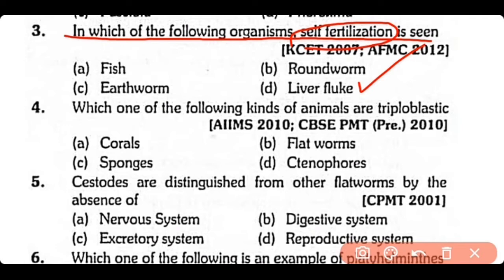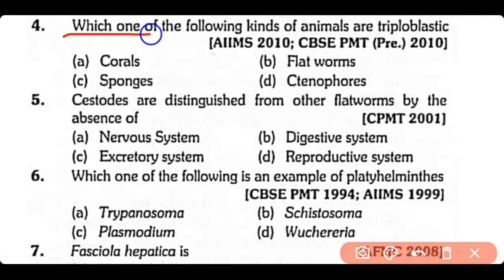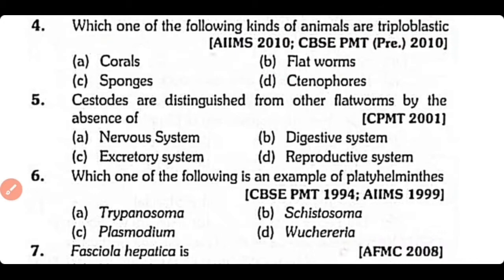Question no.4. Which one of the following kinds of animals are triploblastic: corals, flatworms, sponges, or ctenophores? The correct answer is option B. Flatworms are triploblastic animals present in phylum Platyhelminthes.